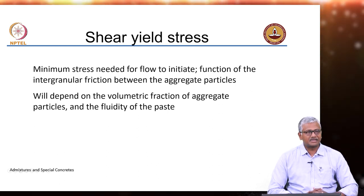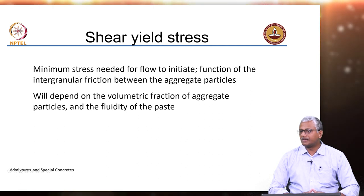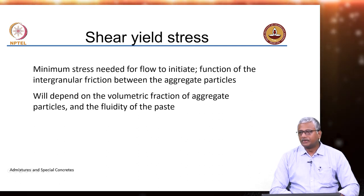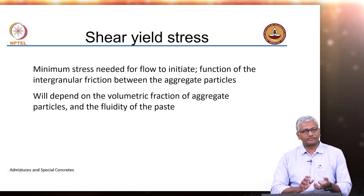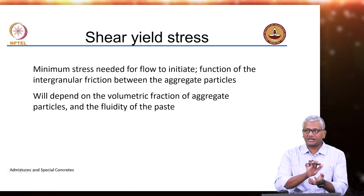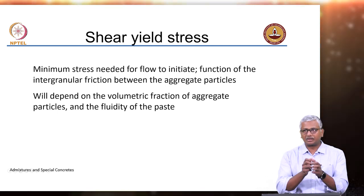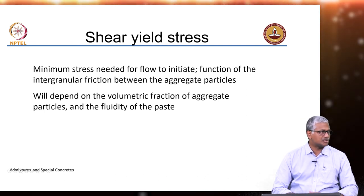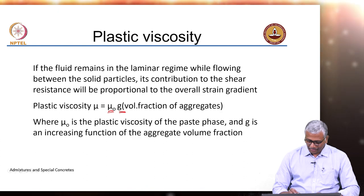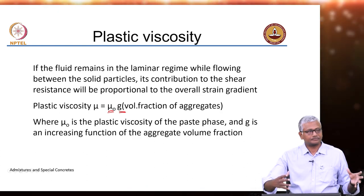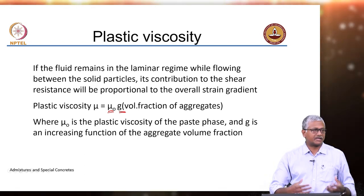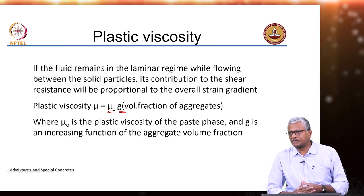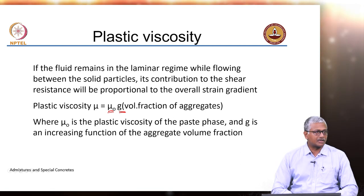The shear yield stress is related to the extent of shear stress required to initiate flow. In simple terms, it is the amount of stress you need to get the aggregates moving past each other. If you have aggregates locked by intergranular friction, you need to put in some stress to get them moving — that is essentially your shear yield stress. Plastic viscosity is the resistance to flow once the concrete starts flowing, governed by both the viscosity of the paste and the amount of aggregates present.